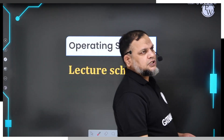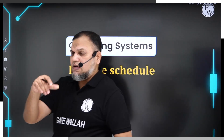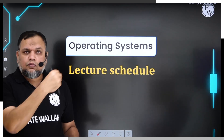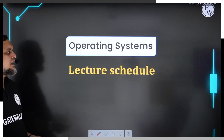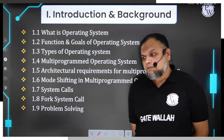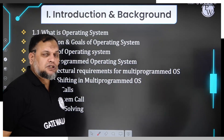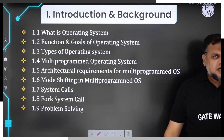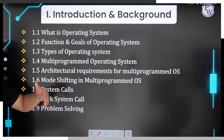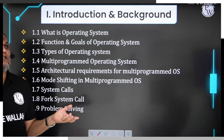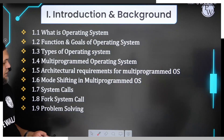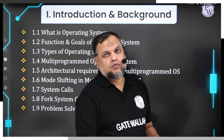Now coming to the lecture schedule and detailed syllabus — the topics covered in operating system. If you look at the GATE syllabus, it gets covered in just two lines, but here I am detailing what is necessary for the GATE exam so you can understand in which order to study which topics. The first topic is Introduction and Background, where we see what an operating system is, its functions and goals, types of operating systems, and multi-programmed operating systems. Under every chapter we will cover necessary problem solving to strengthen your foundation.